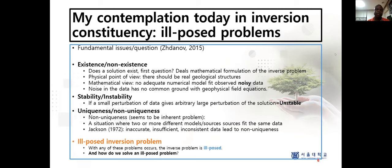The next thing is a non-unique or unique solution, which seems to be an inherent problem for inversion. We have a situation where two or more different models produce the same data. Jackson gave us the cause of non-uniqueness: when you have inaccurate, insufficient, or inconsistent data, that can lead to non-uniqueness. For example, x squared equals y — if x is 2, y is 4; if x is minus 2, y is also 4. That's not unique.